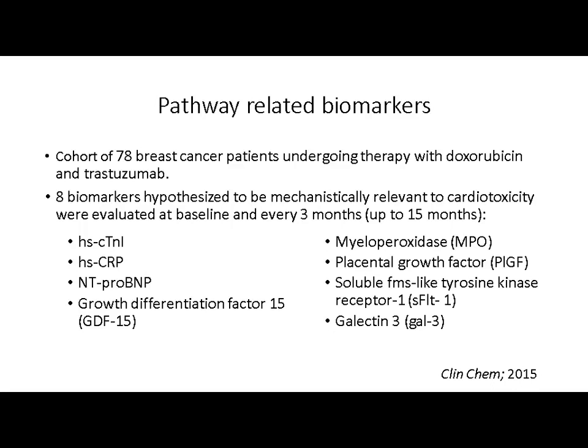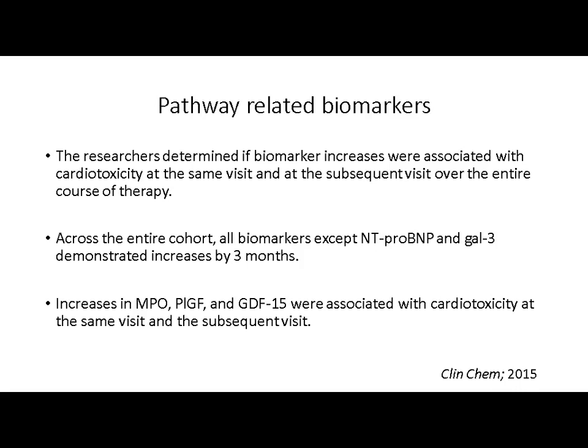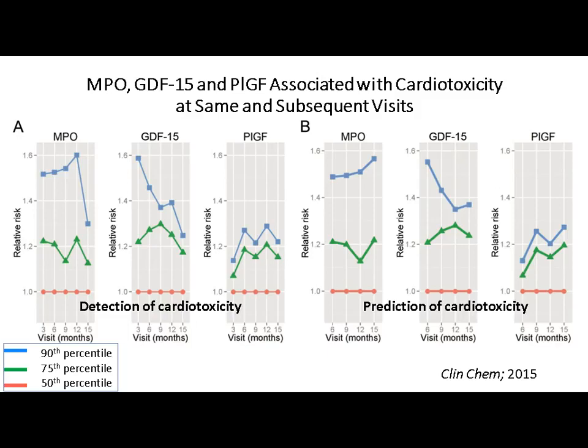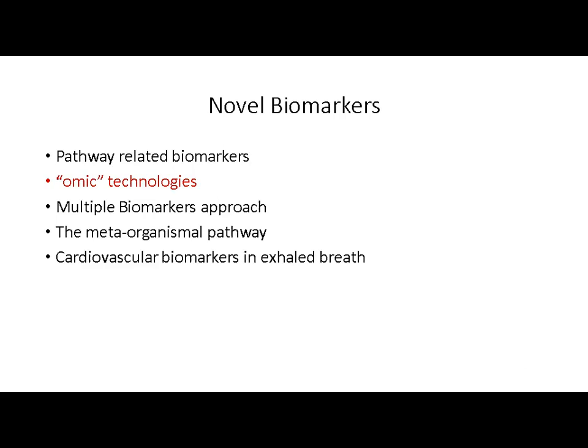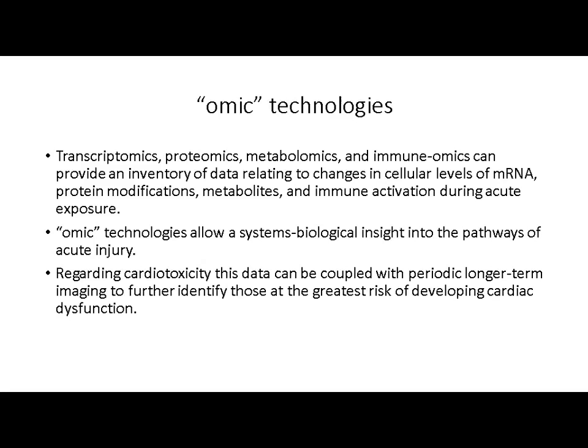A study published approximately two years ago followed a cohort of almost 80 patients with breast cancer undergoing therapy with doxorubicin and trastuzumab. Eight biomarkers hypothesized to be mechanistically relevant to cardiotoxicity were evaluated at baseline and every three months up to 15 months. All biomarkers except NT-proBNP and galectin-3 demonstrated increases by three months. Increases in myeloperoxidase, PIGF, and GDF-15 were associated with cardiotoxicity not only at the same visit but also at subsequent visits, suggesting these three biomarkers can be used for both detection and prediction of cardiotoxicity.